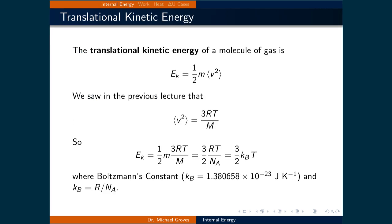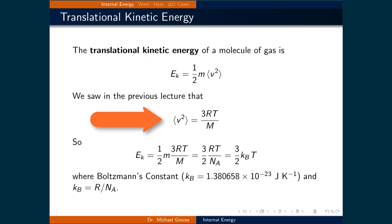To start our discussion of the internal energy of a gas, let us examine one of the types of energy that particles in motion all have: kinetic energy. The translational kinetic energy of a molecule of a gas is one-half times m times the average of the velocity squared. We saw in the previous lecture that the average of the velocity squared is equal to 3RT divided by M, where capital M is the molar mass.